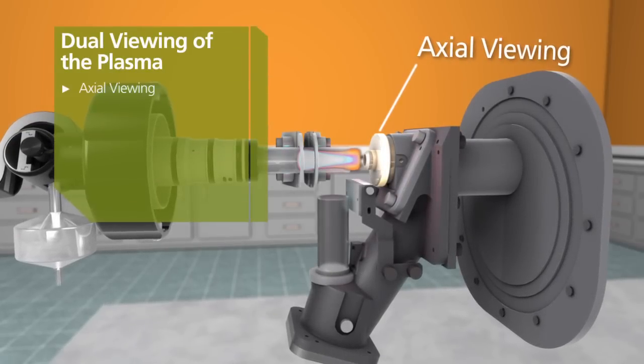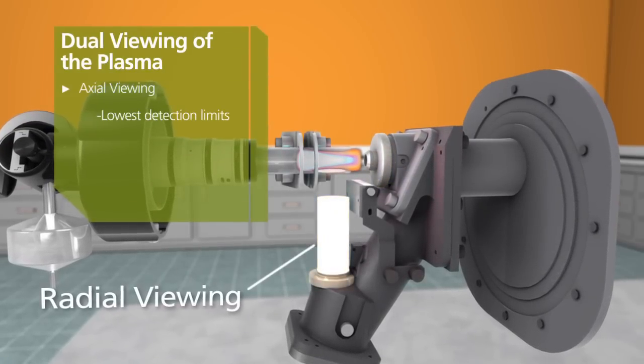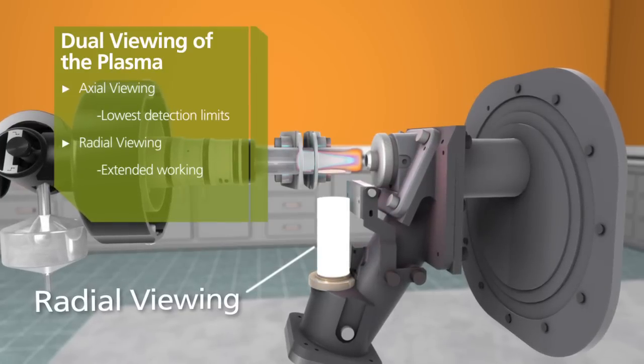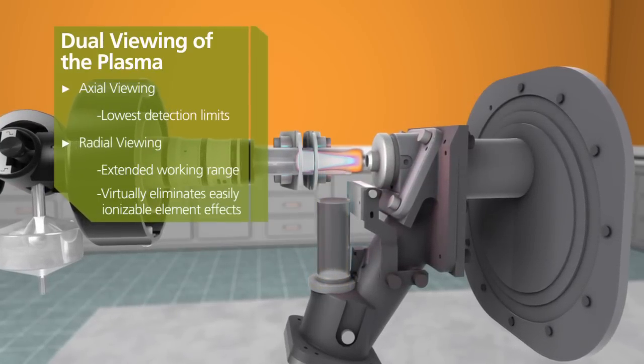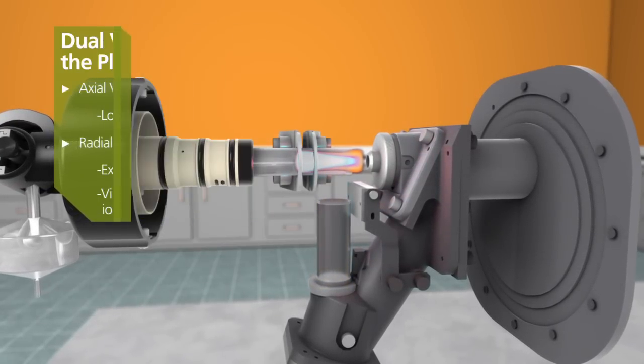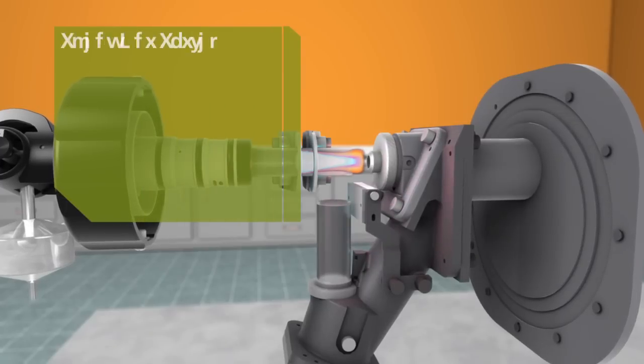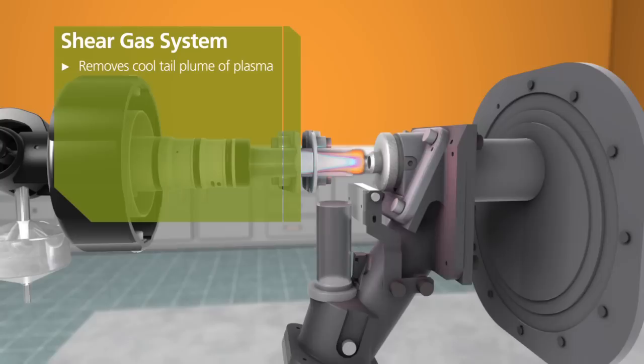Axial viewing provides the lowest detection limits, while radial viewing allows extended working ranges. Every Optima 8000 series instrument features a unique shear gas system that removes the cool tail plume of the plasma to eliminate interferences.